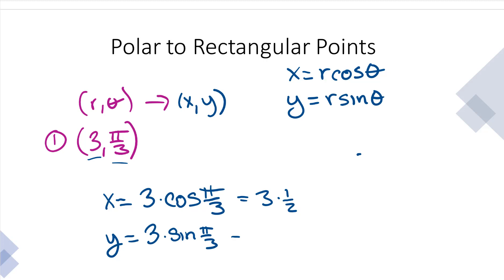So we get 3 times a half and 3 times root 3 over 2. It looks like our x, y is going to be 3 halves, comma, 3 root 3 over 2. Come on, dude. All you got to know: x is equal to r cosine of theta, y is equal to r sine of theta.